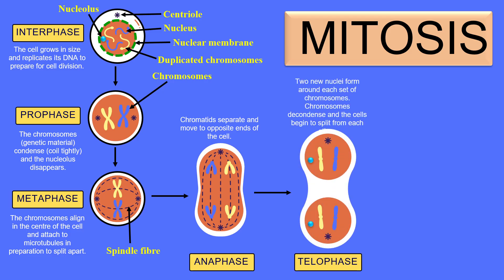In the next phase, telophase, the formation of two new cells begins. A new nuclear membrane forms around each set of chromosomes, and a new nucleolus will also form. In telophase, two new nuclei are formed across the chromosomes.